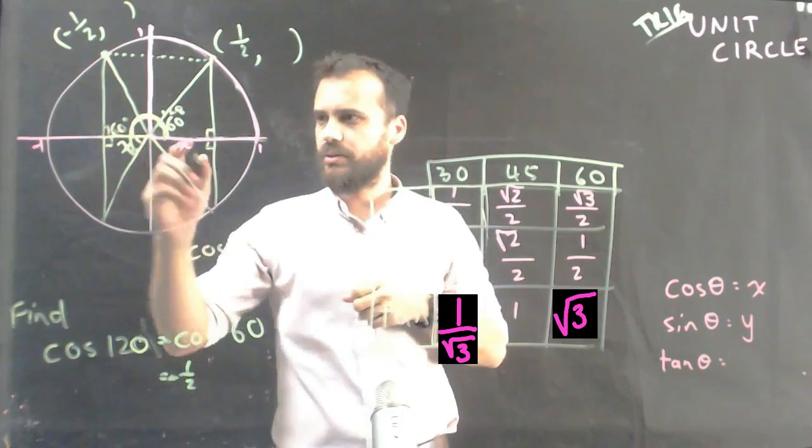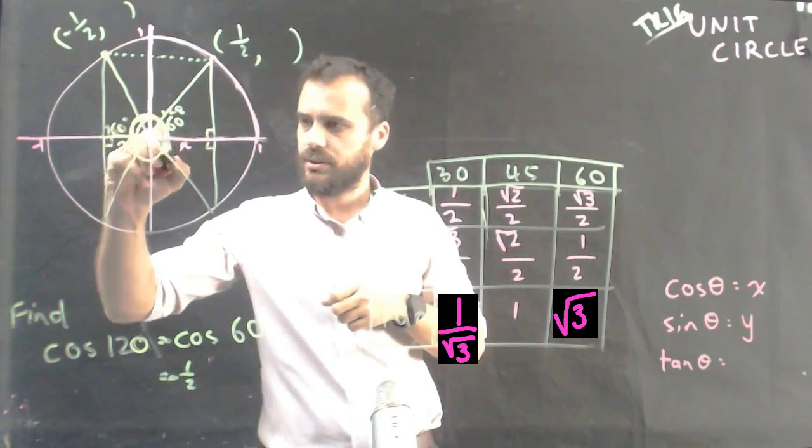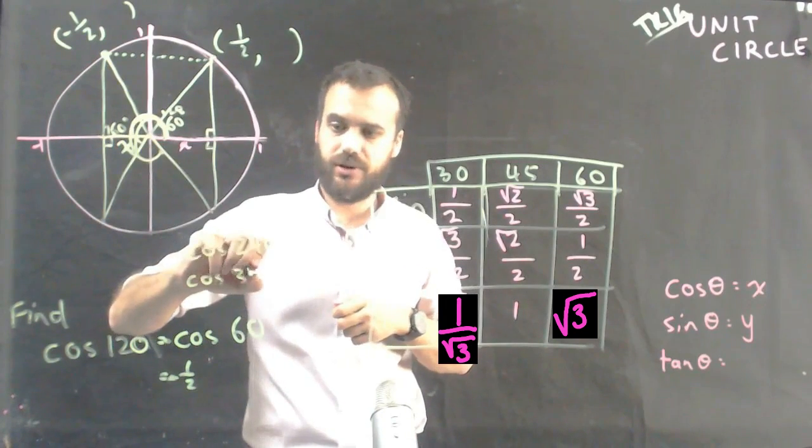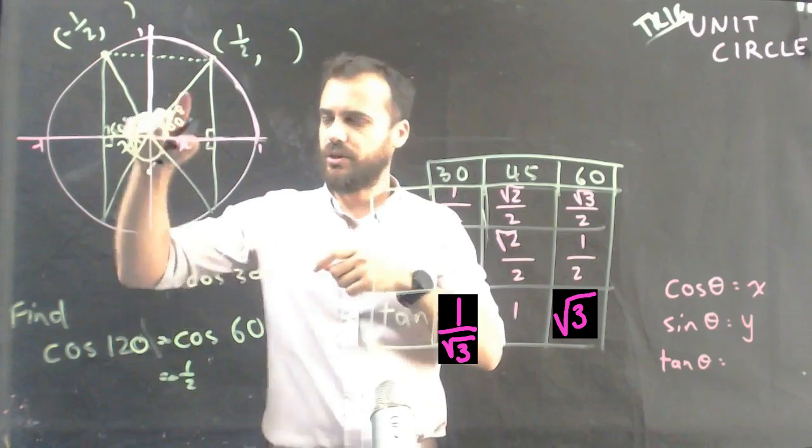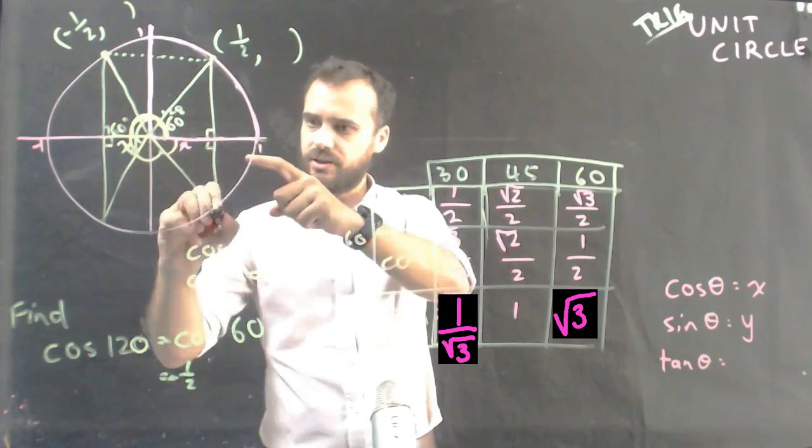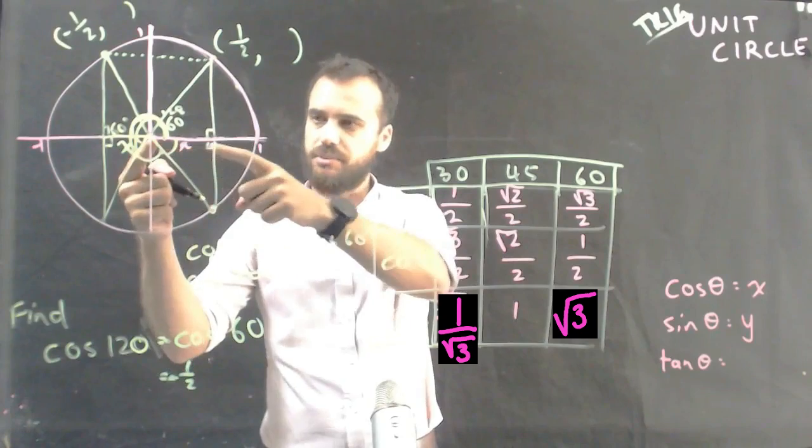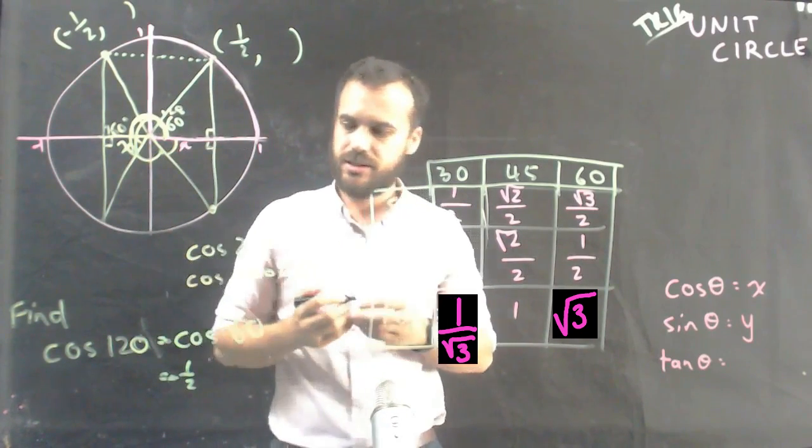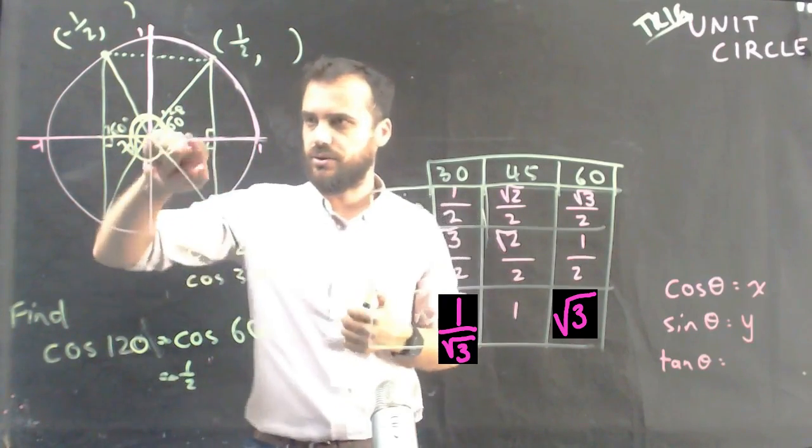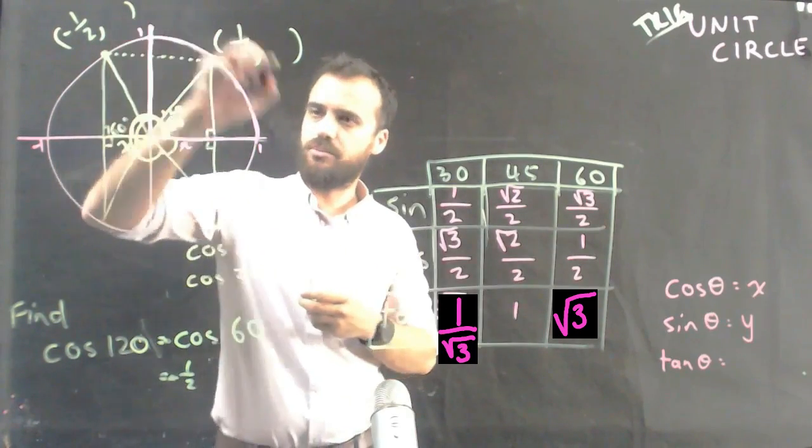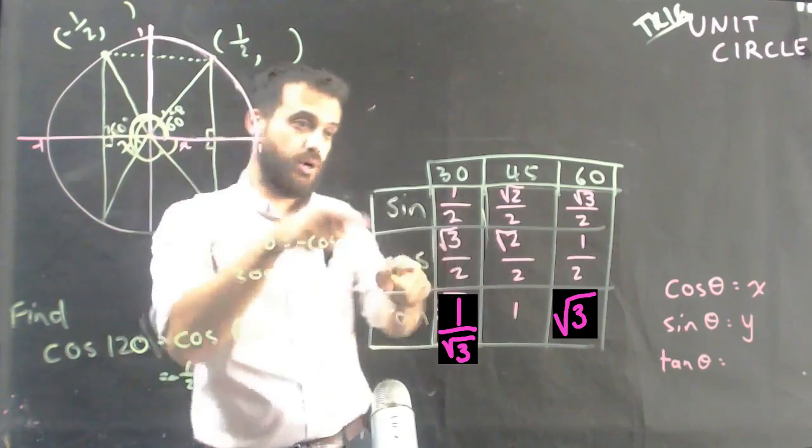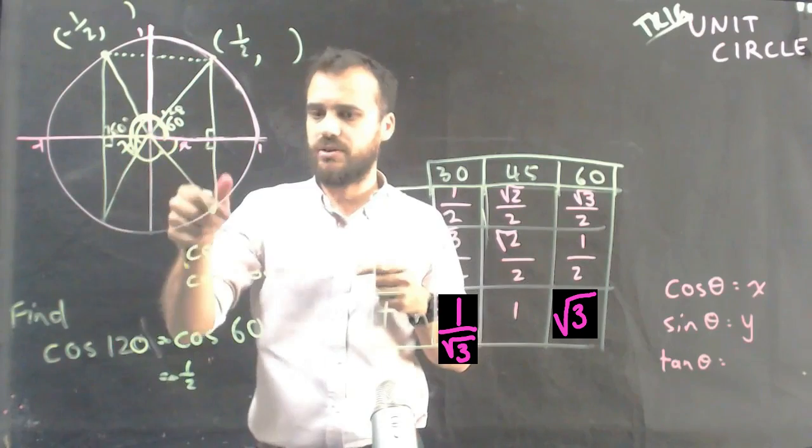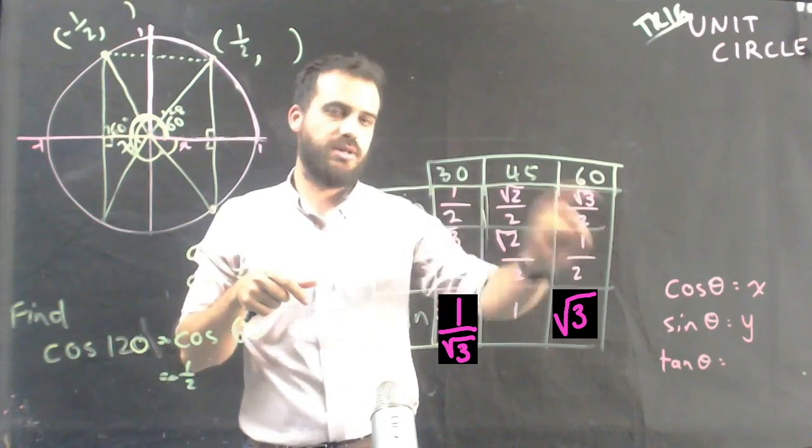And then if I come all the way around to here, I end up at there, which is cos 300 or 300. And if I want to find cos 300, then the x value of this dot is going to be positive. So it's going to be cos 60. So we always refer back to quadrant 1 because we know all of quadrant 1 because of this table. And then we use symmetry to figure out whether it should be positive or negative.